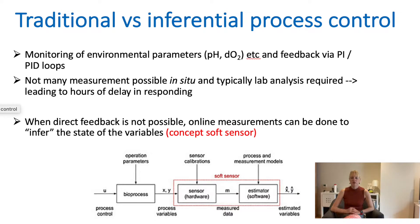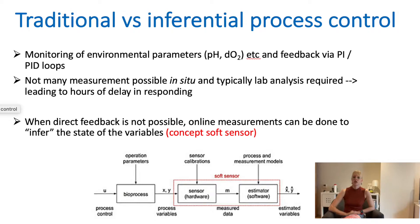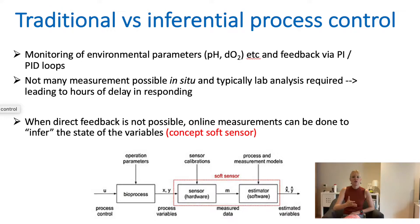First of all, looking at what is inferential control. Physiological control is what we can measure in our reactor directly using in-situ sensors. These are things like pH, temperature, and speed of agitation, and we can use that directly to control processes.